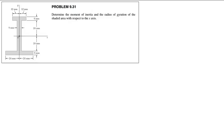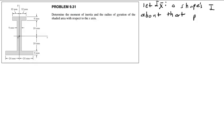I'm going to use a tabular method to work through this problem. I'm going to let I_x-bar be the moment of inertia of a shape about its own centroid. I know that I_x-bar for a rectangle is bh cubed over 12. The moment of inertia of a rectangle about its own centroid is bh cubed over 12.